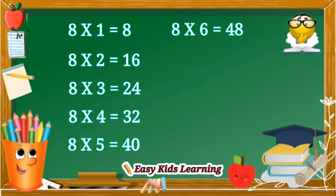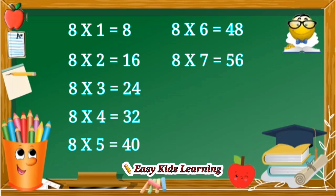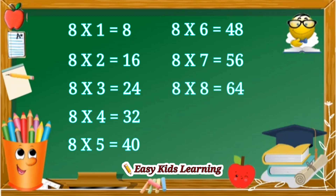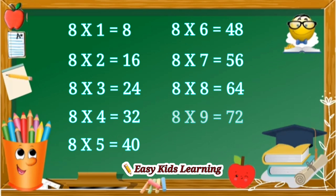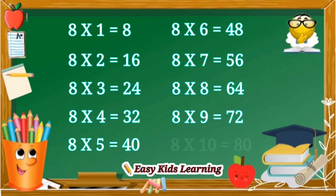8 sixes are 48. 8 sevens are 56. 8 eights are 64. 8 nines are 72. 8 tens are 80.